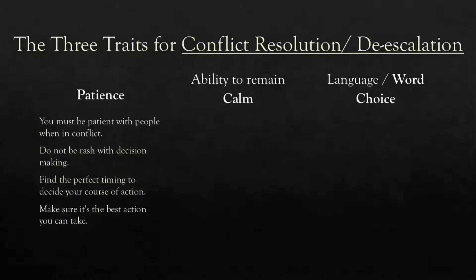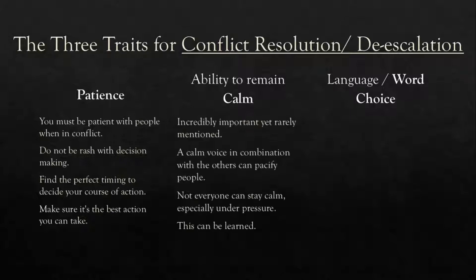You must be patient with people in conflict and shouldn't be rash with decision making. You should find the perfect timing to decide your course of action. Next up, ability to remain calm. It's incredibly important yet rarely mentioned. A calm voice combined with the other traits can pacify people. Not everyone can stay calm under pressure, but this can be learned. When you speak softly, calmly, directly, and objectively, you can reflect this onto the other person. On a psychological level, it's hard to stay mad at somebody who's completely calm, rational, and objective.